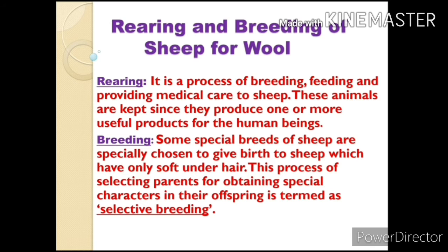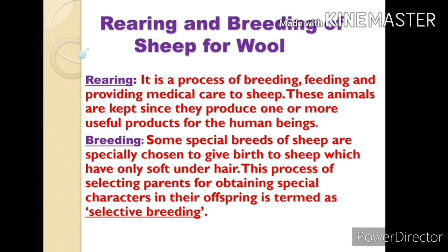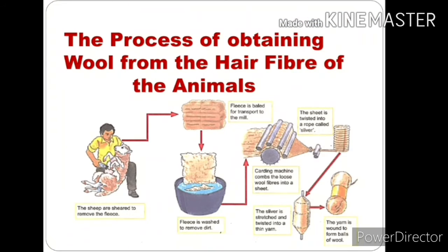The next topic is breeding. Some special breeds of sheep are specially chosen to give birth to sheep which have only soft underhair. This process of selecting parents for obtaining special characters in their offsprings is termed as selective breeding.